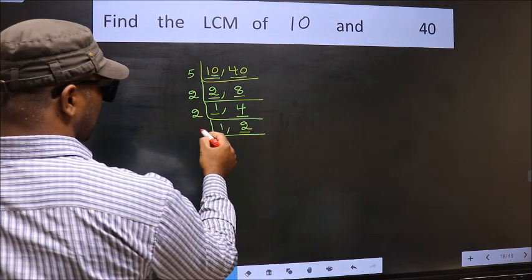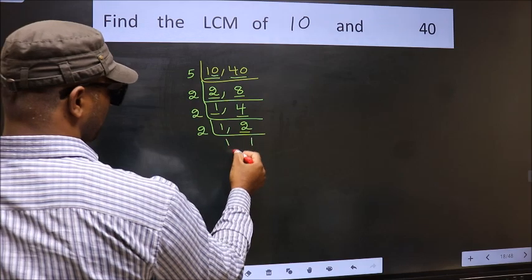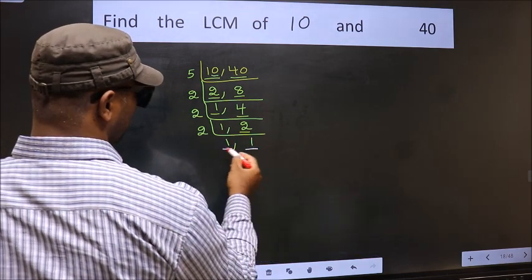Now we have 2. 2 is a prime number, so 2 times 1 is 2. So we got 1 in both the places.